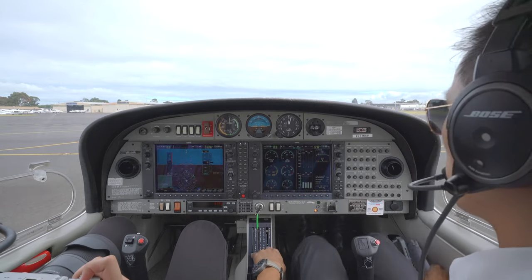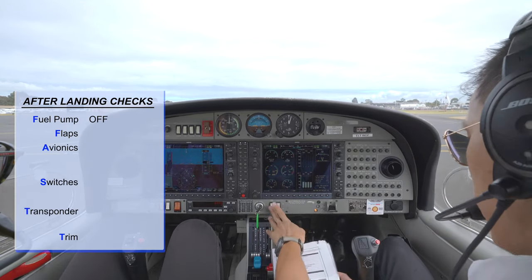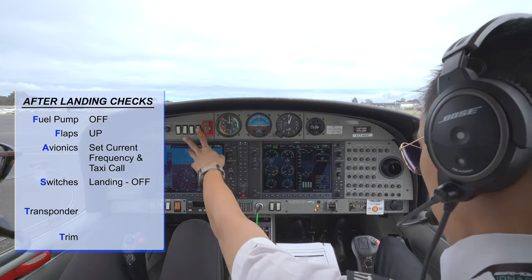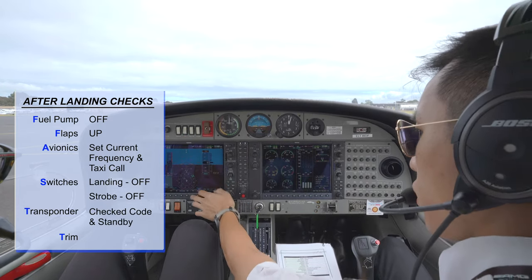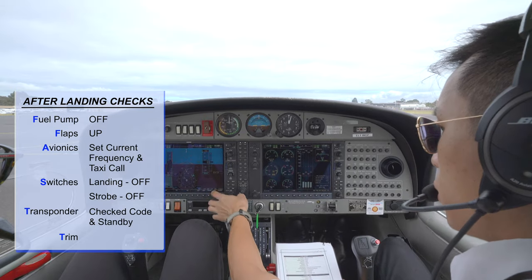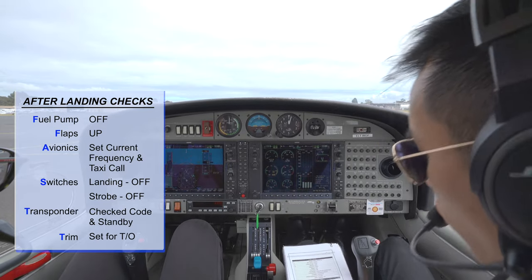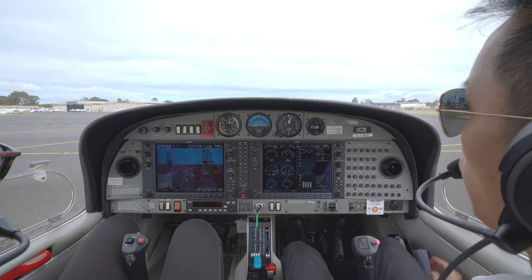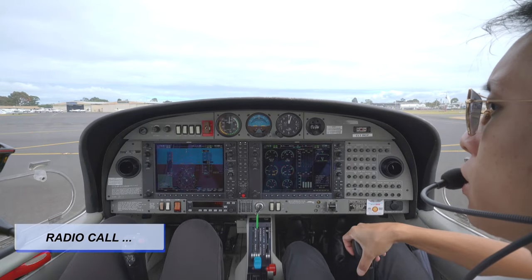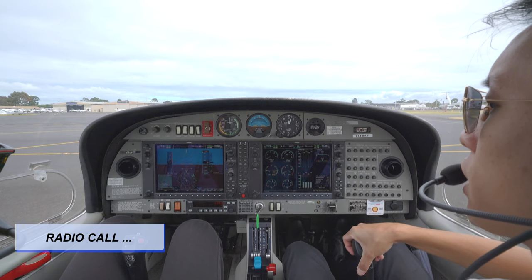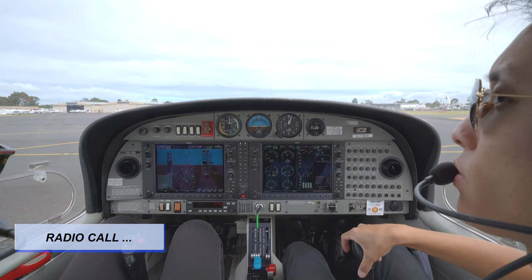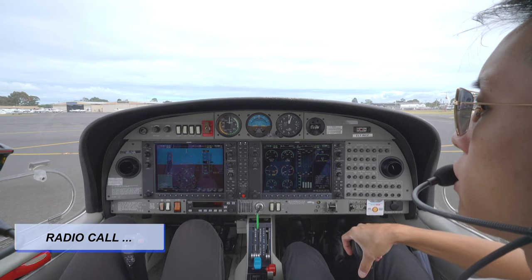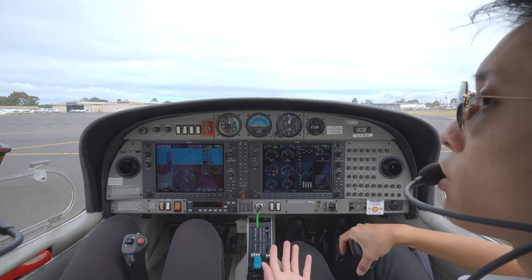Do the after-landing checks: power off; flaps up; avionics to current frequency; landing lights off; strobes off; transponder — check, cold and standby; trim set for take-off. After-landing checks complete. Make a radio call to ground to request taxi back to apron: 'Melbourne Ground, Juliet Whiskey Whiskey on Alpha 2, request taxi to apron.' Ground responds: 'Juliet Whiskey Whiskey, taxi to apron.' And that is a normal circuit.